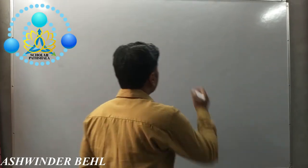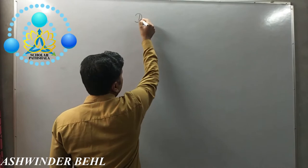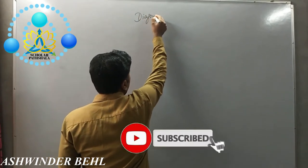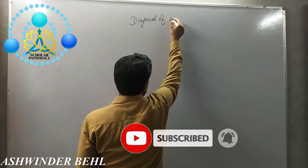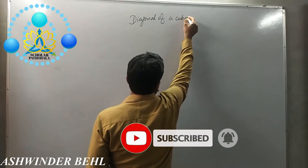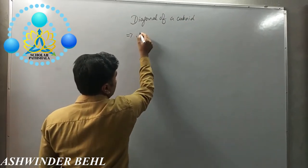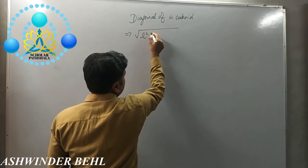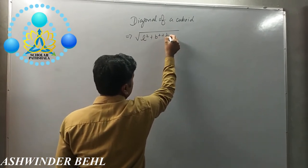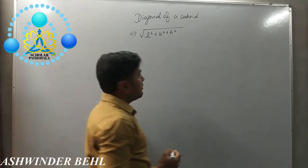Today we will discuss how to prove the diagonal of a cuboid. The diagonal of a cuboid is √(L² + B² + H²). Now we want to prove this formula.